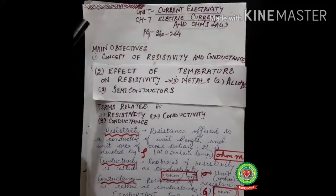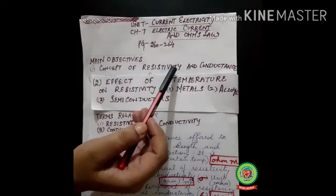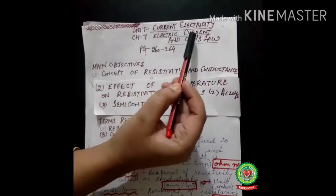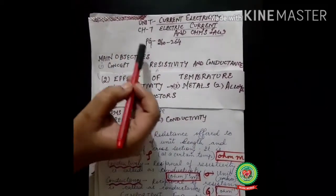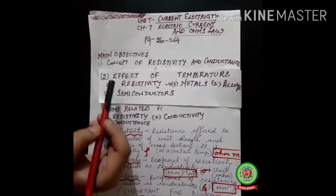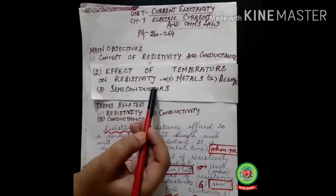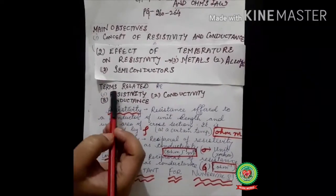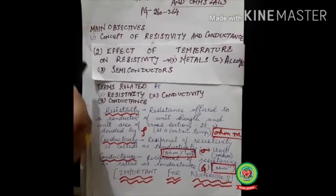Hello students, today we shall be starting with the main topics: concept of resistivity and conductance, under the unit current electricity chapter — electric current and Ohm's law, page number 260–264. The main objectives of these topics will be resistivity, conductivity, effect of temperature on resistivity for metals, alloys, and semiconductors, and related terms: resistivity, conductivity, and conductance.